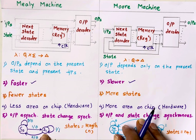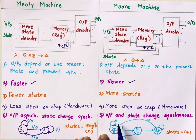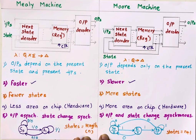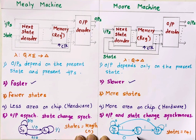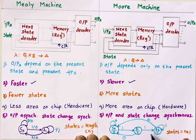In a Moore machine, output is written below the state name. So S0 is the state and 0 is the output — for every state output is fixed. If input is 0 it remains in the same state; if input is 1 it goes to the next state. To detect '1,1' we need three states because for S1 output is already fixed as 0, so if a 1 comes it must go to a new state with output 1, whereas in the Mealy machine it could stay in the same state.